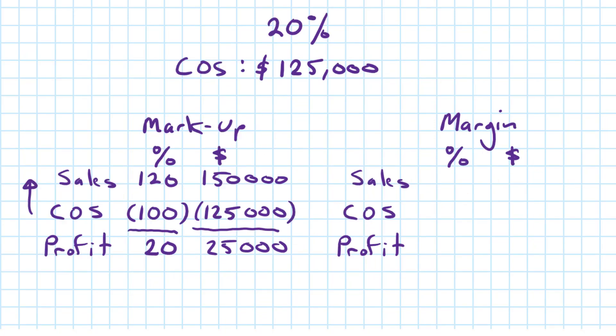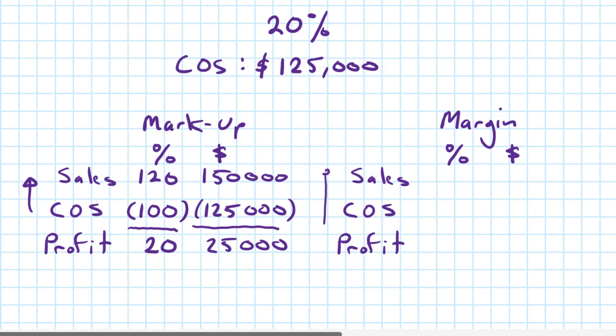Let's compare that to a profit margin. Here, we're starting at the top and we are working down. So I will put 100% next to sales. And the profit margin is 20%. We're comparing 20% in both approaches.